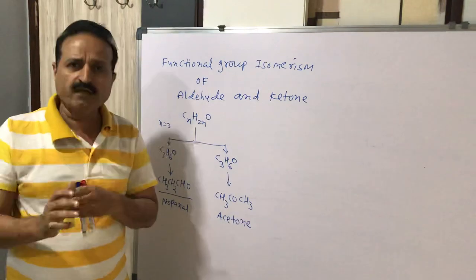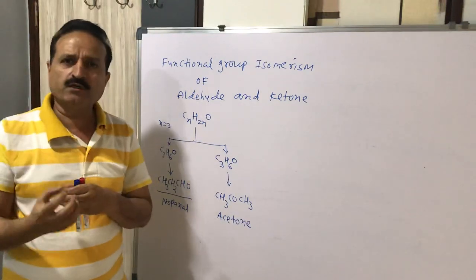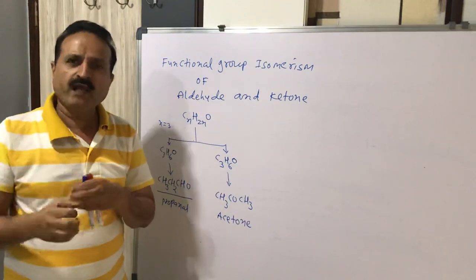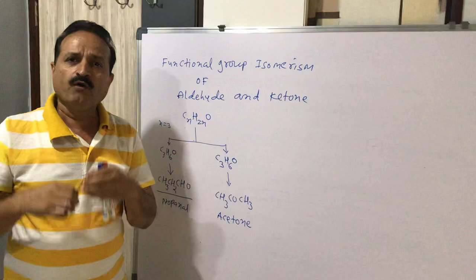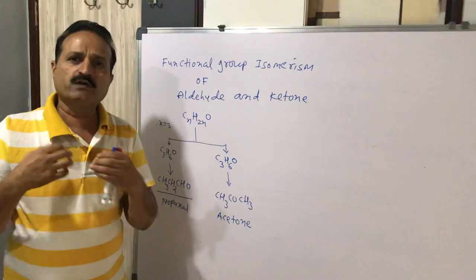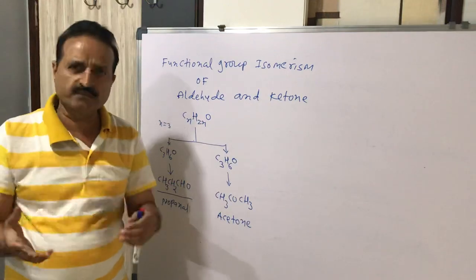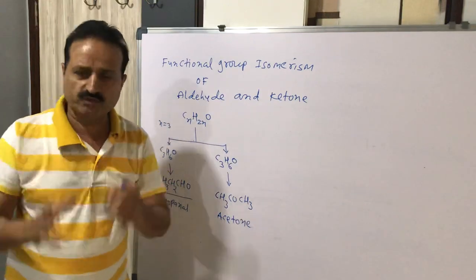We have understood this simple but important topic — that aldehydes and ketones have functional group isomerism because their common molecular formula is the same. Please repeat this small lecture to understand what functional group isomerism is. Thank you very much.